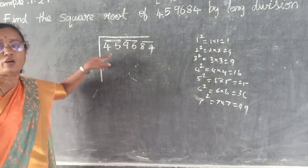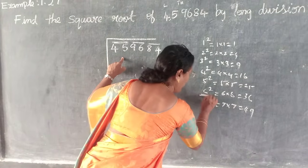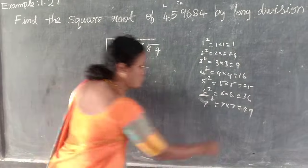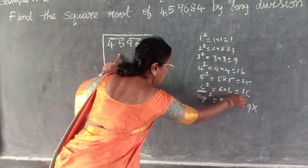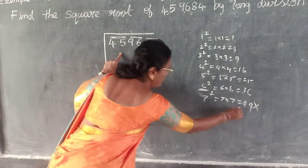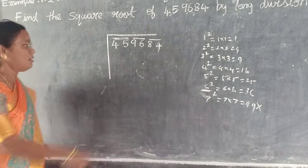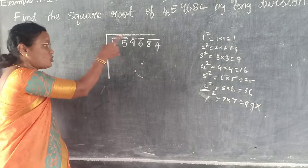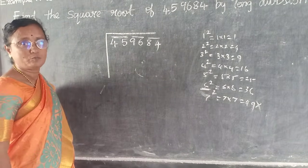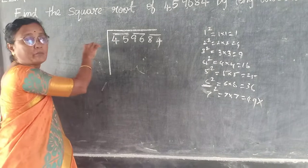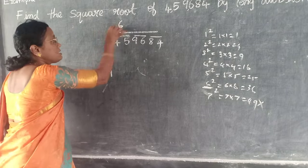But here what is the number you are getting? 45. So which one you have to take? 6. You should not take 49. Understand? 6 square is 36. Because 7 square is 49 — it should not exceed. Understand? 45 means it should be less than or equal to this number. So we take 6.